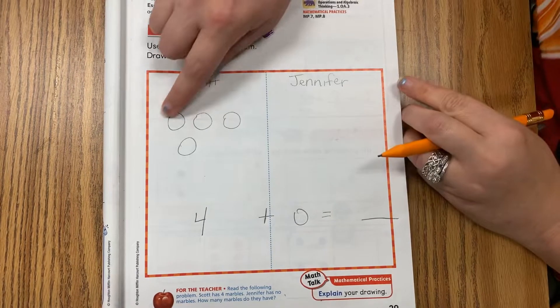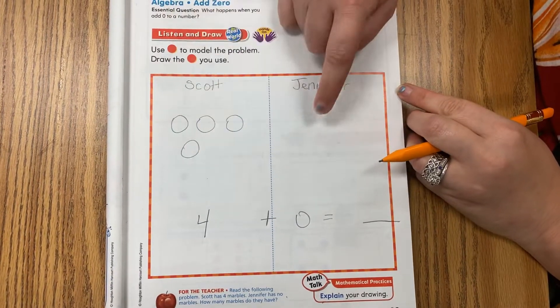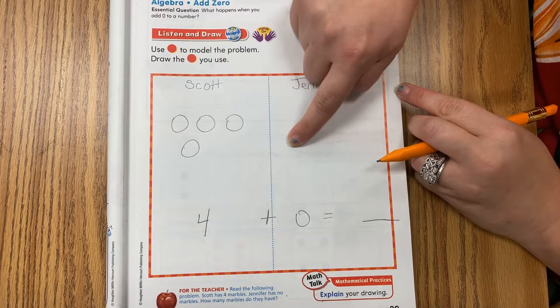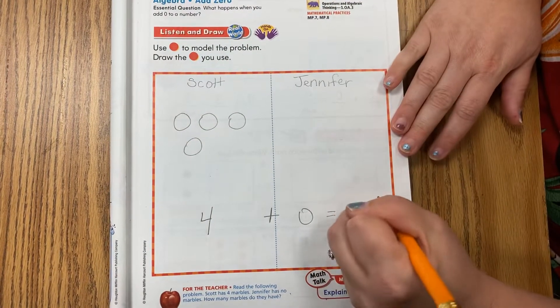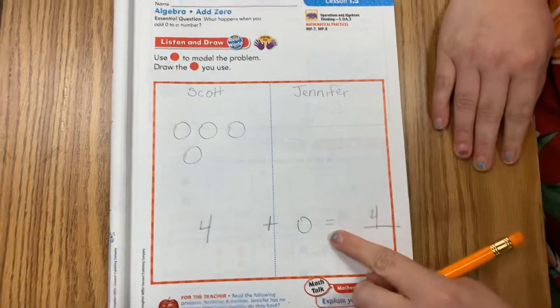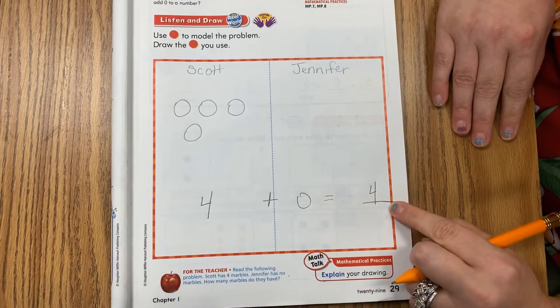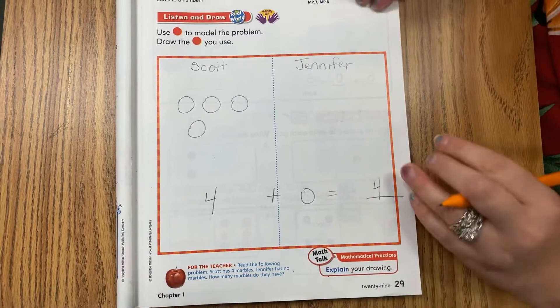Let's count them. One, two, three, four. Uh-oh, there's nothing here to add. So all I have is four. So four plus zero is the same as four. Remember, this means the same as.